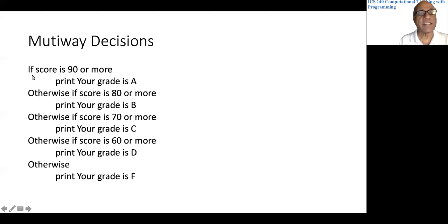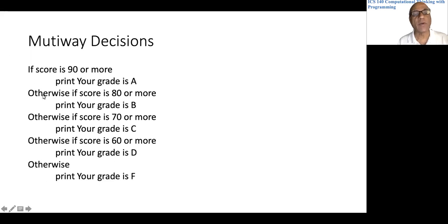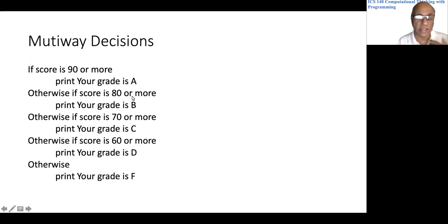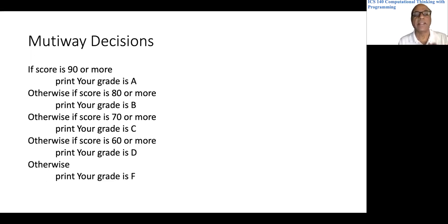This 'otherwise' is for the first 'if.' When we say otherwise, it means the score is less than 90. Now if the score is more than or equal to 80, we know the score lies somewhere between 80 and 90.